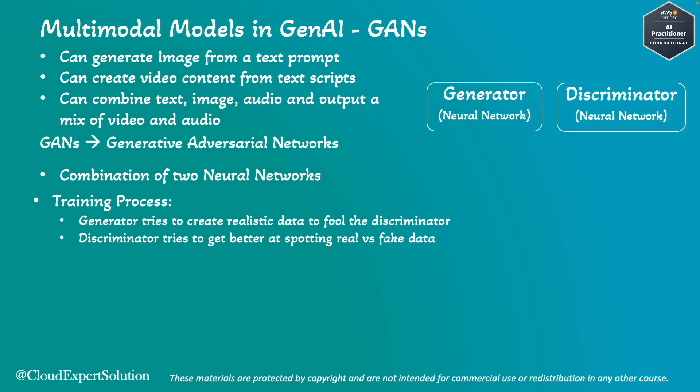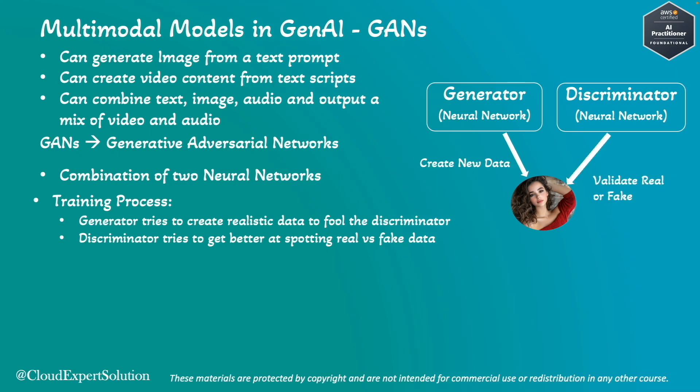During the training process, the Generator and Discriminator are trained together in a competitive setting. The Generator tries to create realistic data to fool the Discriminator, while the Discriminator tries to get better at distinguishing whether data is real or fake. For example, if the task is to generate an image of a lady, the Generator creates the image and the Discriminator checks if it looks like a lady or not.